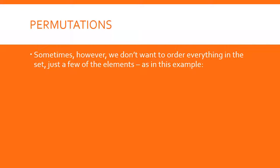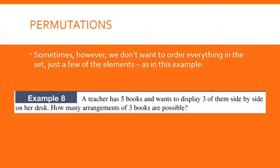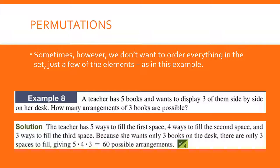But sometimes we don't want to order everything in the set — we just want to pull a few things out. A teacher has five books, and she wants to display three of them side by side on her desk. How many arrangements of three books are possible? She needs to fill three spaces: for the first space she has five books to choose from, for the second she has four, and for the third she has three. So five times four times three means she has 60 possible arrangements.